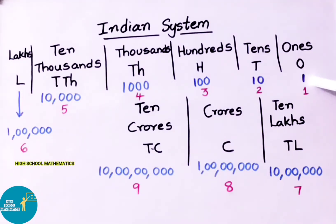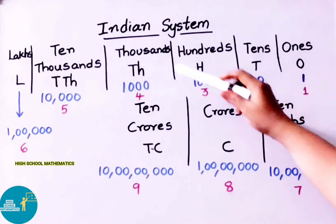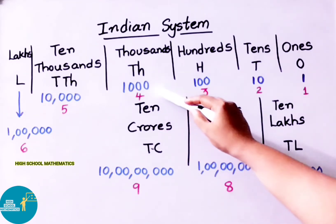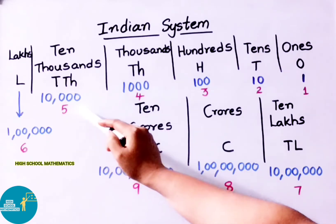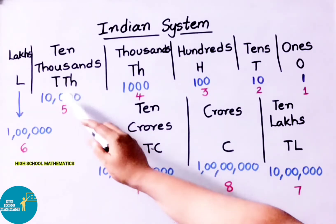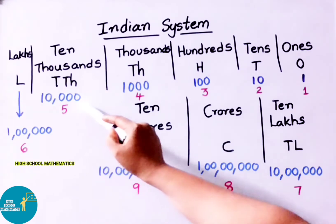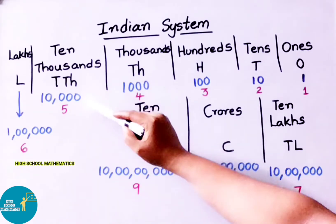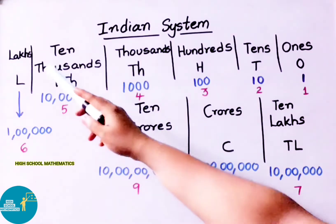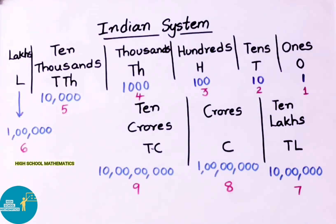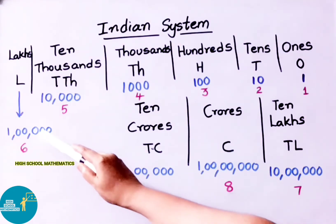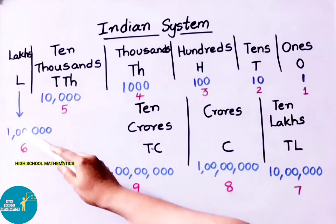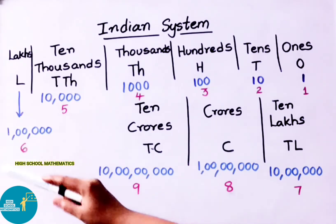Ones means 1; tens means 10 (one followed by one zero); hundreds means 100 (one followed by two zeros); thousand means 1,000 (one followed by three zeros); ten thousand means 10,000 (one followed by four zeros). Here, three digits — ones, tens, hundreds — come together in the ones period. For ten thousand, we need four zeros.